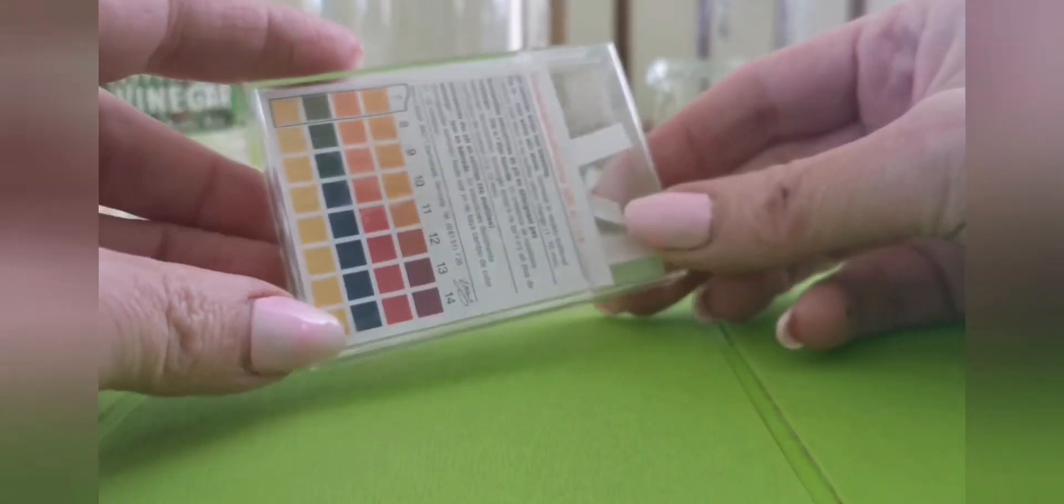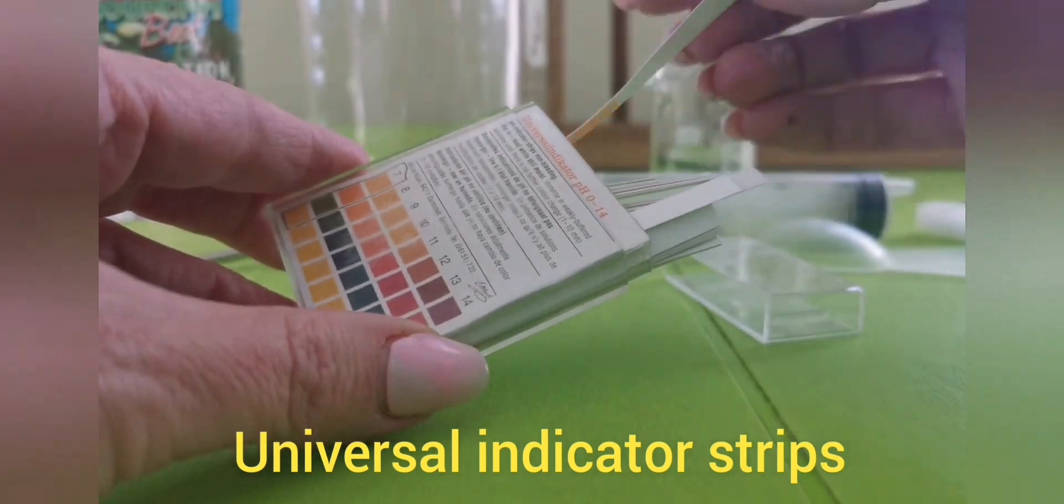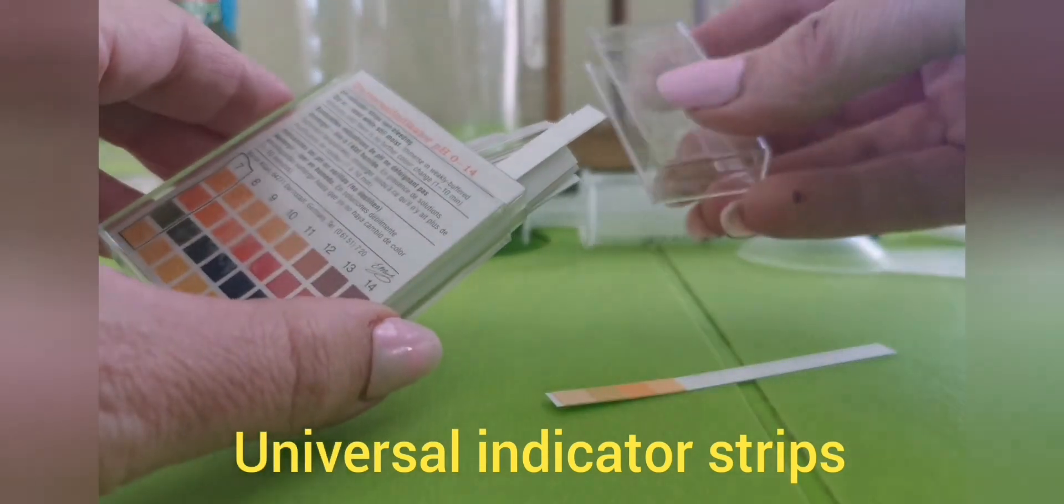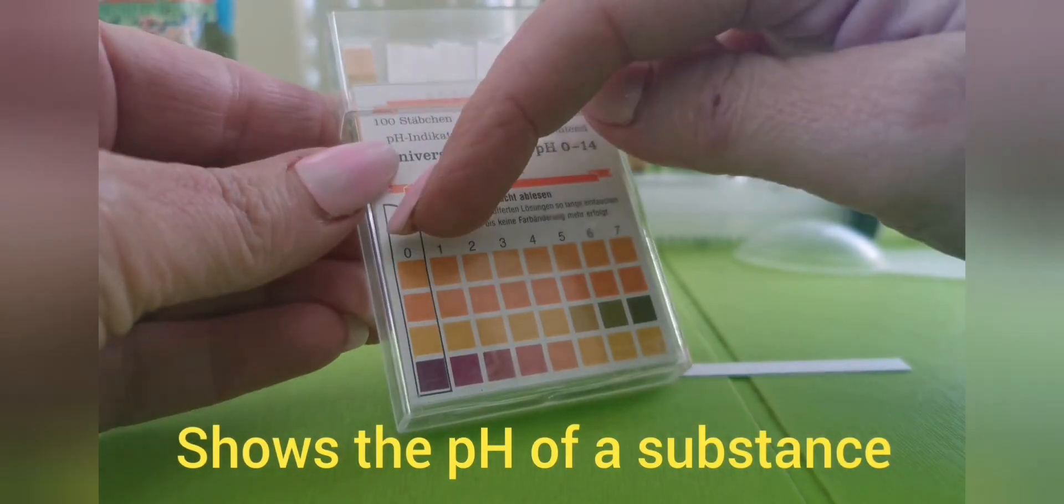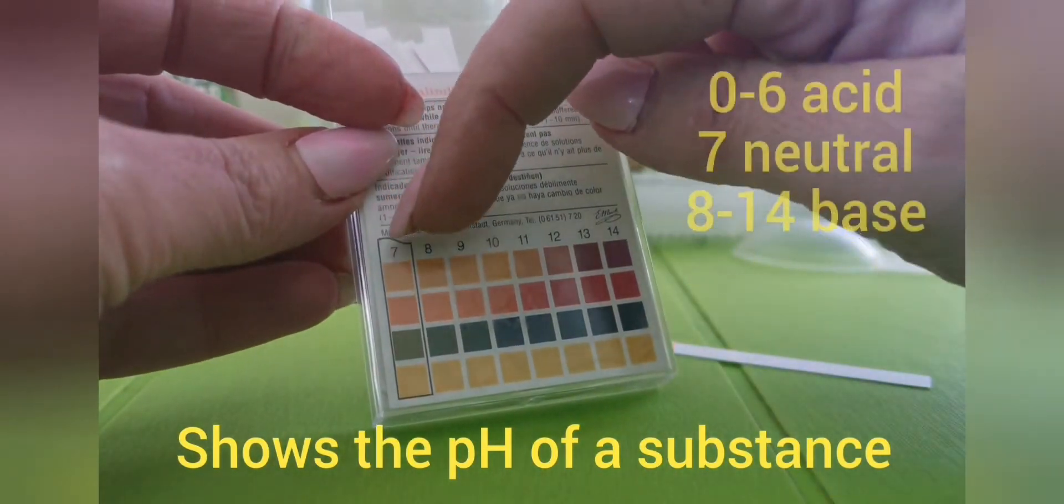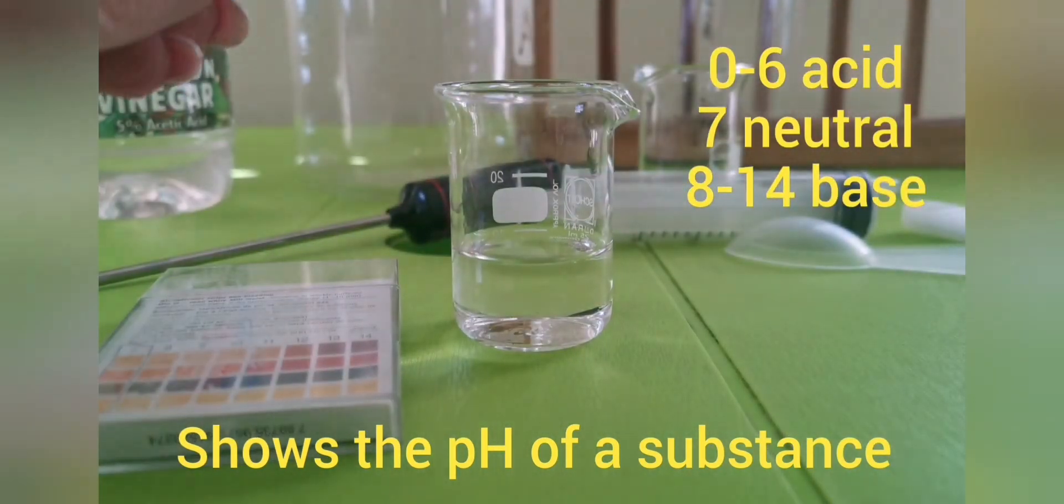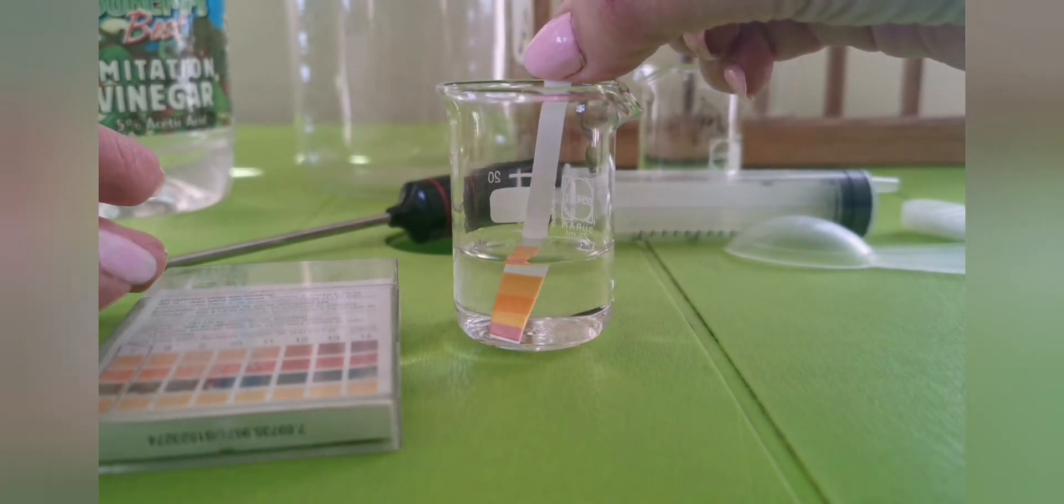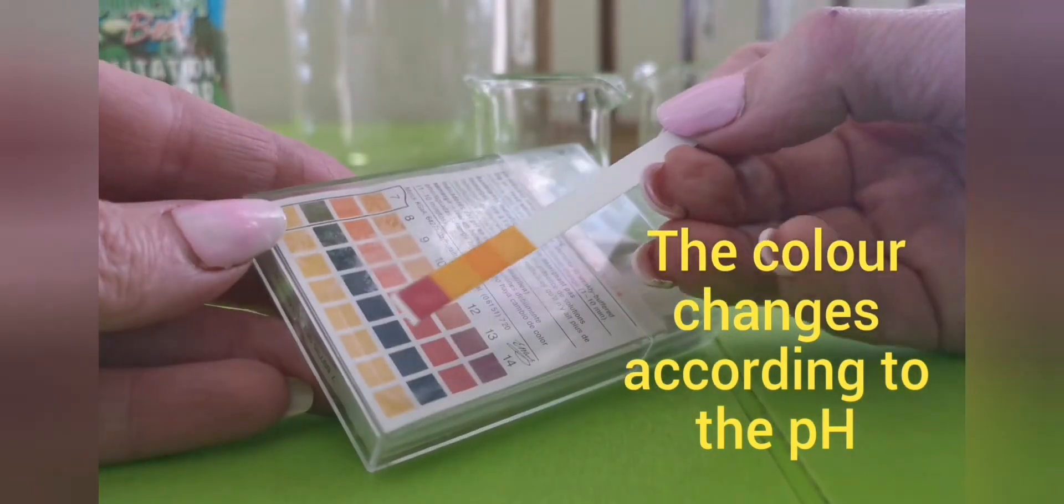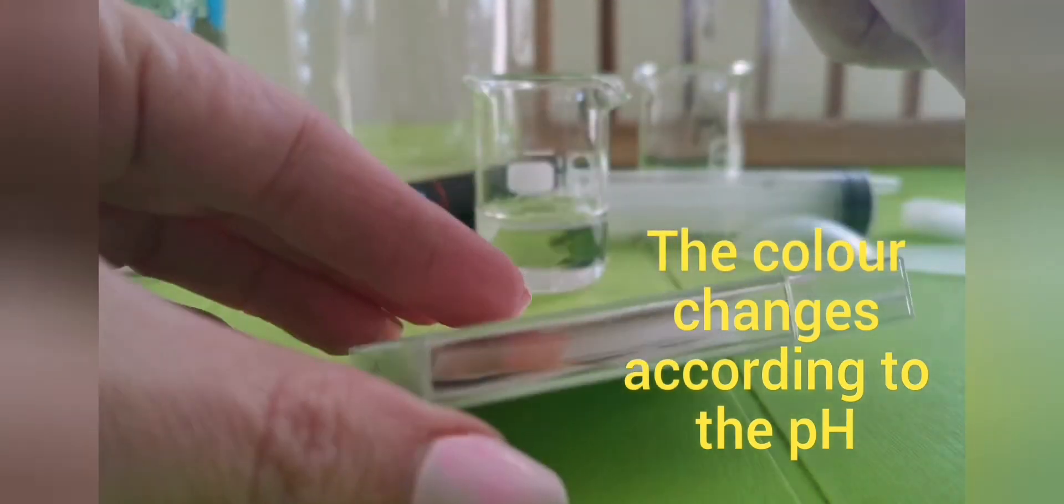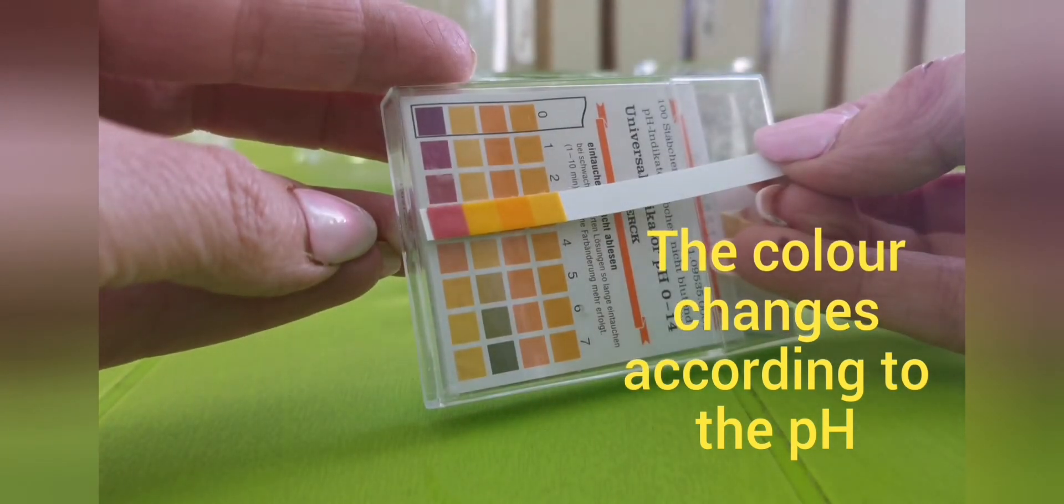These little strips are called universal indicator strips. And you can see on the side, there's all sorts of colors on the container. The strips inside also have various colors on. Now you use this to determine the pH of something. Now we know pH goes from 0 to 7 for acidic and 7 to 14 for base. So what you'll do is you'll take this little strip and here I've got some vinegar. If I stick it in, immediately see how the color changes on the strip. I then shake the liquid off, put it on the side of the container and see where the color matches. Wherever the color matches, here we go, it matches three. So the pH of vinegar is three.